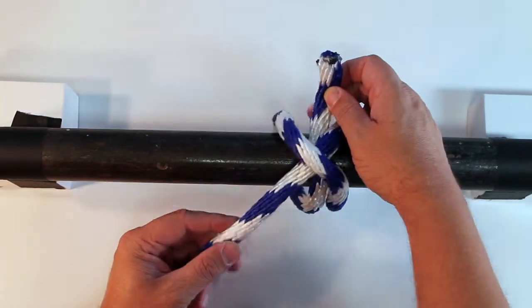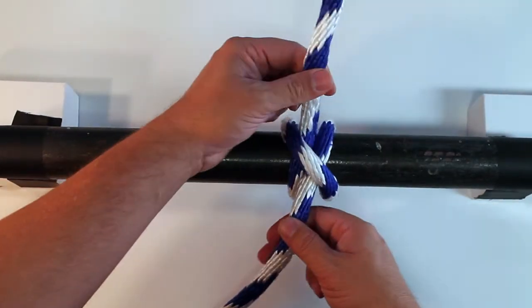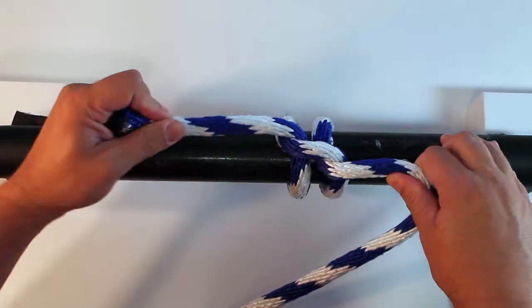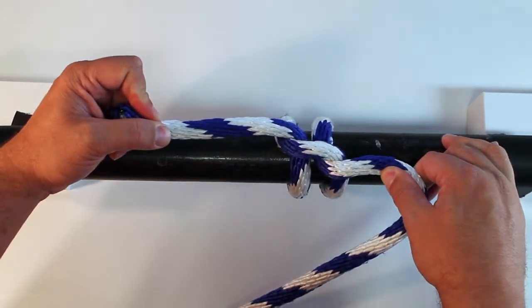Once it goes under the X, you're going to pull tight. Once you've done that, if you pull it side to side and it makes an H, then you know you've done it correctly.